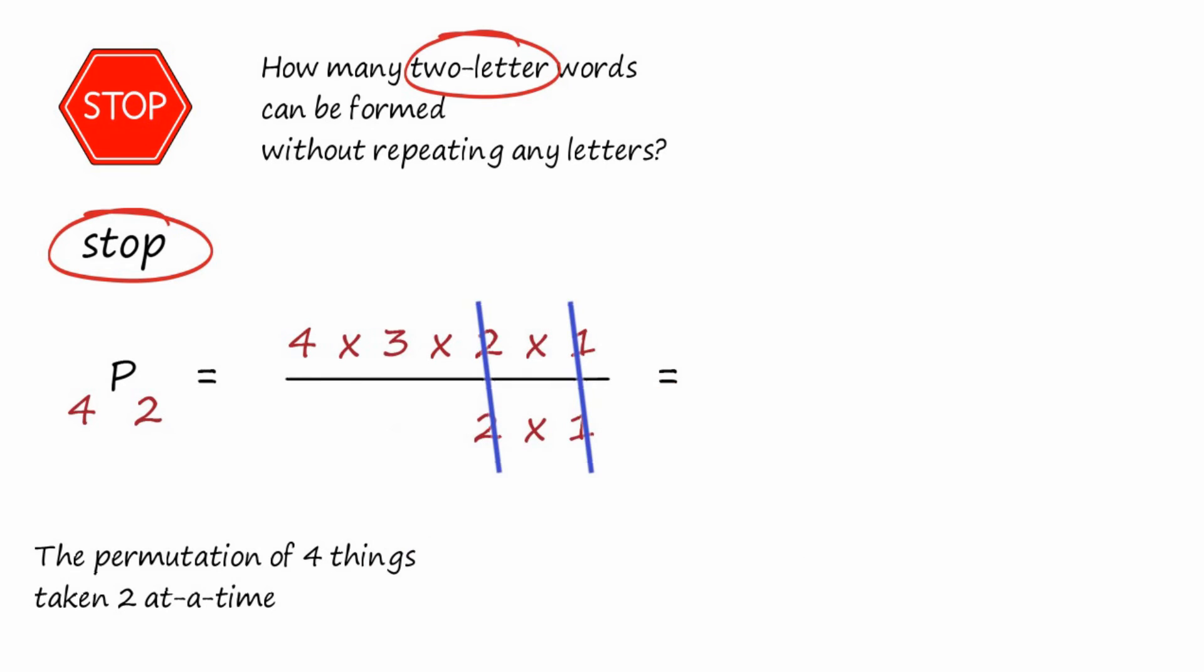We can divide out the ones, and we're left with four times three, which is twelve, which is our answer.